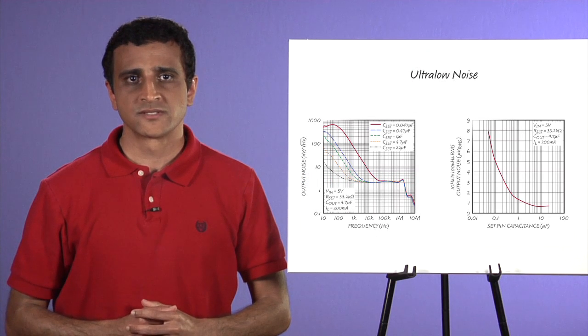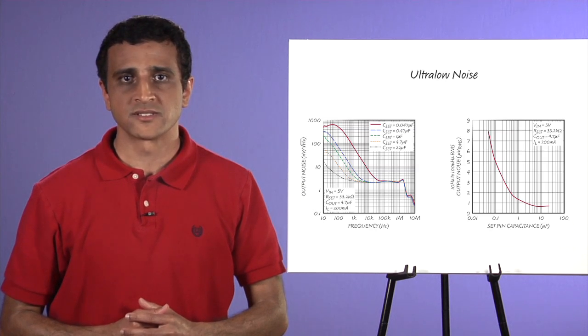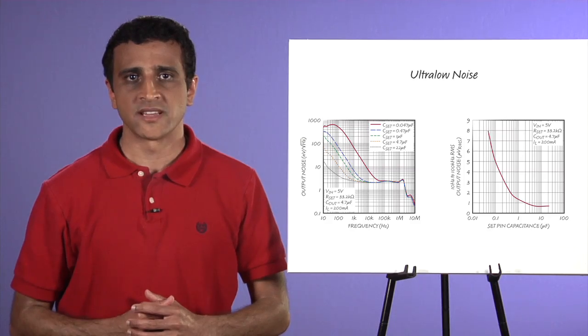Here's the LT3042's noise performance. It offers 0.8 microvolt RMS integrated noise over 10 Hz to 100 kHz and a spot noise of only 2 nanovolts per root hertz at 10 kHz.